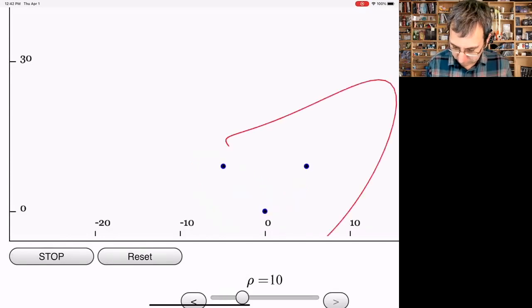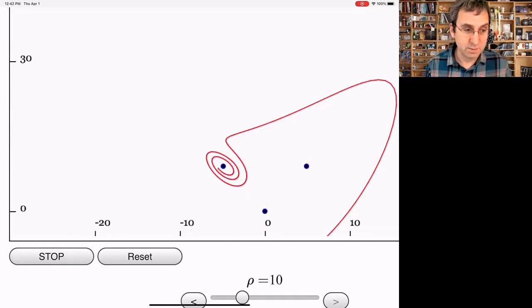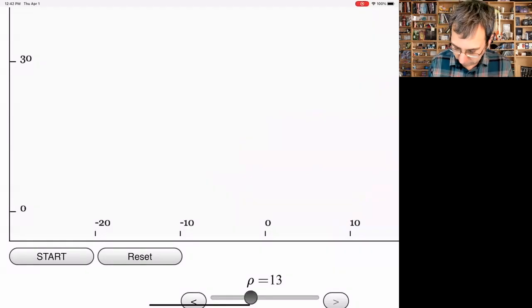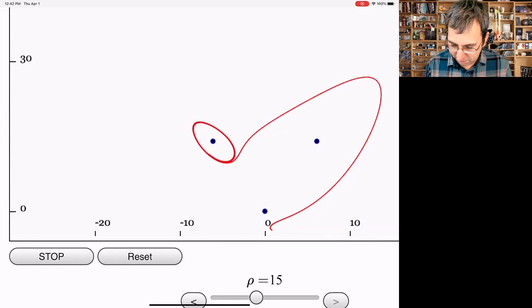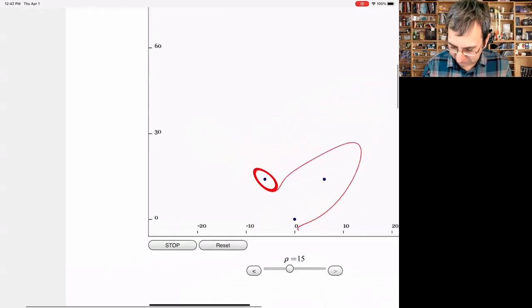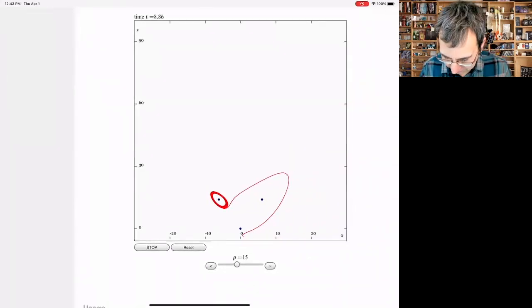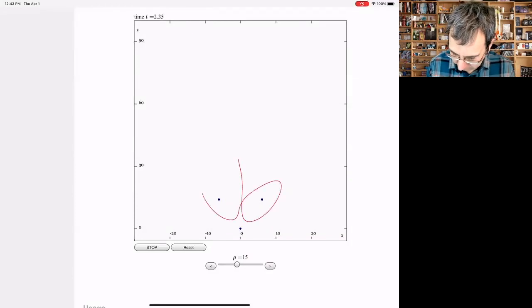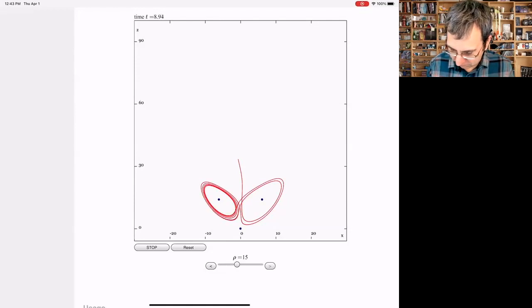So you get the idea. Wherever it starts, it's going to end up at one or the other of those two fixed points. Let's go to another value. I don't know, 10. It's just sort of making larger excursions, but then still spiraling in. About like 15. Now, I don't know what's going on here. It is doing something weird. This is just a different initial condition. It was like looping around one of them, and then it's looping around the other. Looks like we already have some kind of chaos going on.